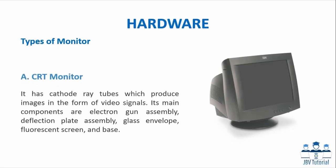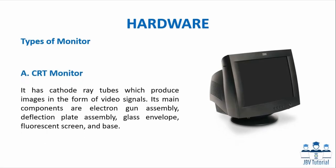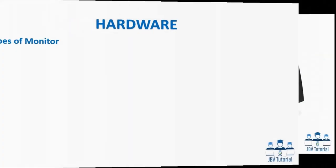There are four types of monitor. CRT Monitor: It has cathode ray tubes which produce images in the form of video signals. Its main components are the electron gun assembly, deflection plate assembly, glass envelope, fluorescent screen, and base.